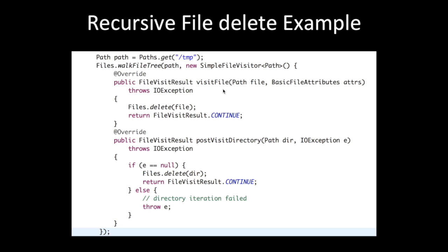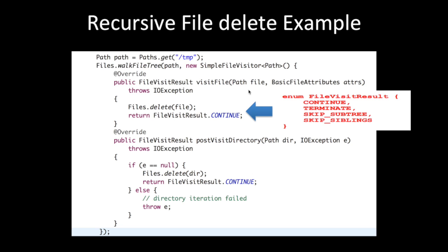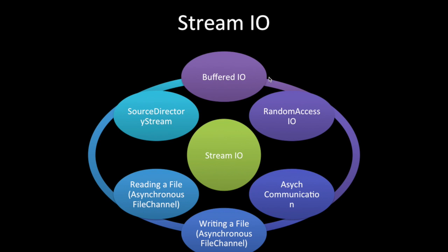These are the overridden methods which use BasicFileAttributes and the Path API. We can also control flow with CONTINUE, TERMINATE, SKIP_SUBTREE, and SKIP_SIBLINGS — these are the enums defined for the file visitor result. This is a simple example of a recursive file delete.